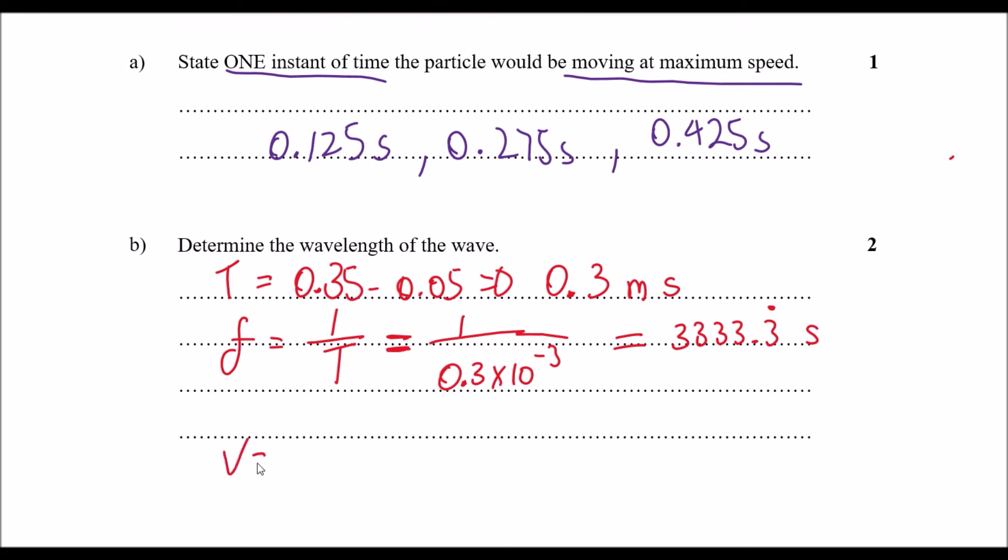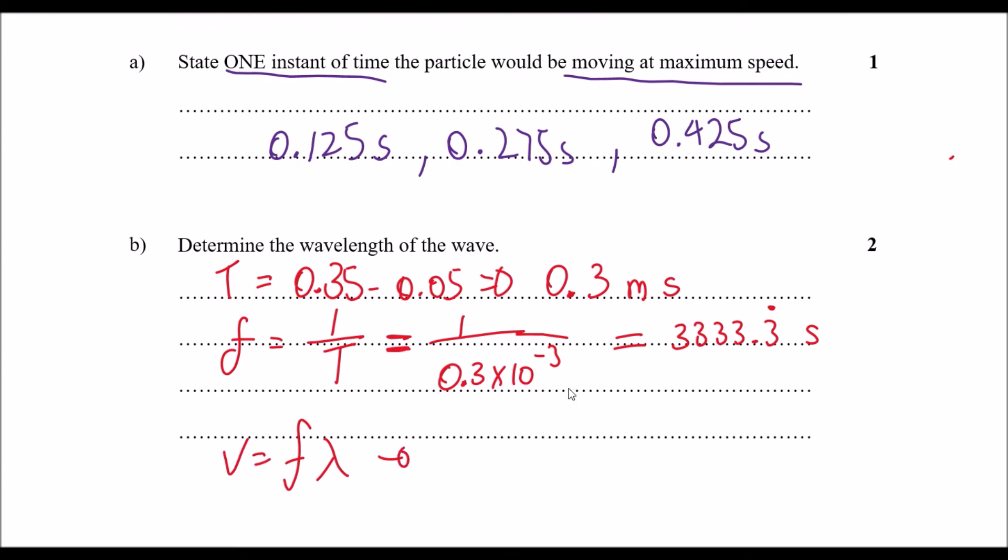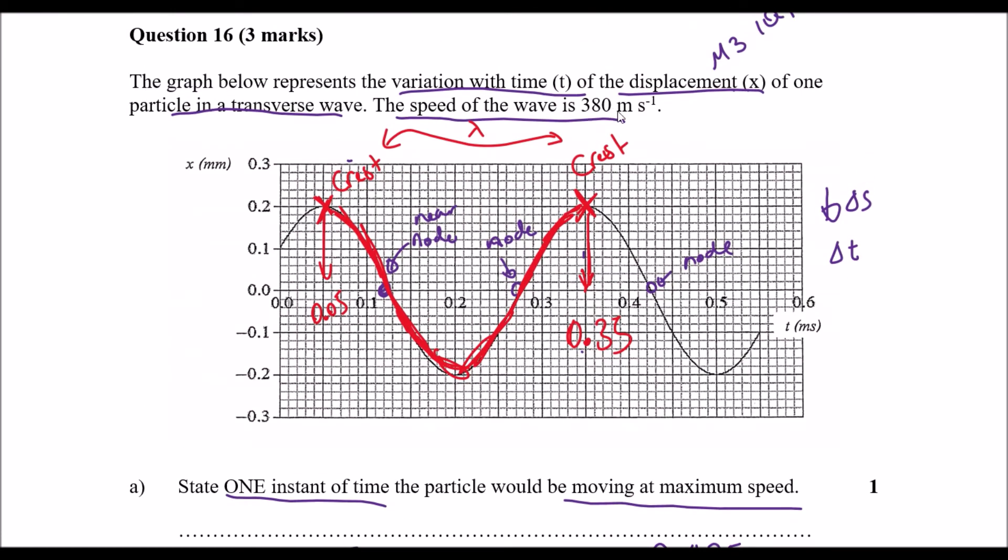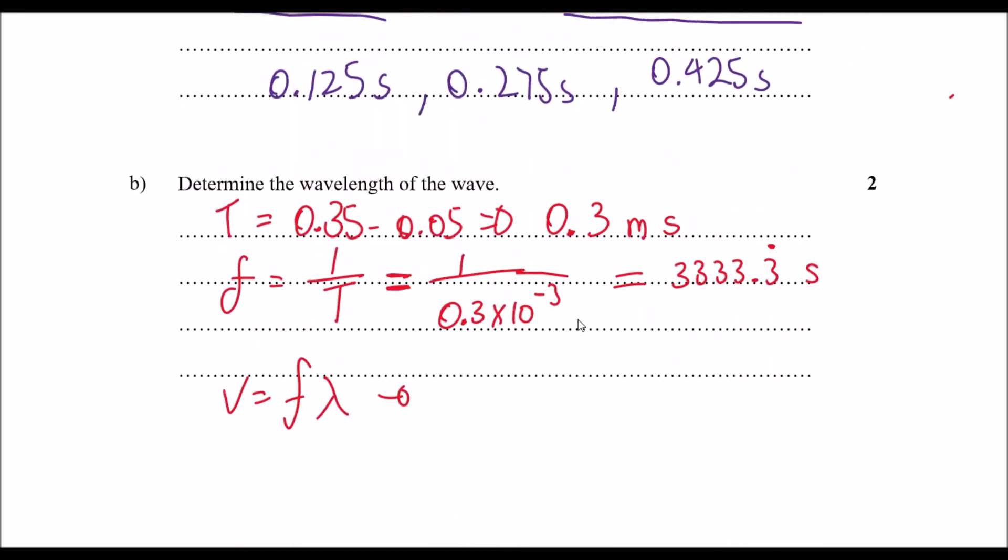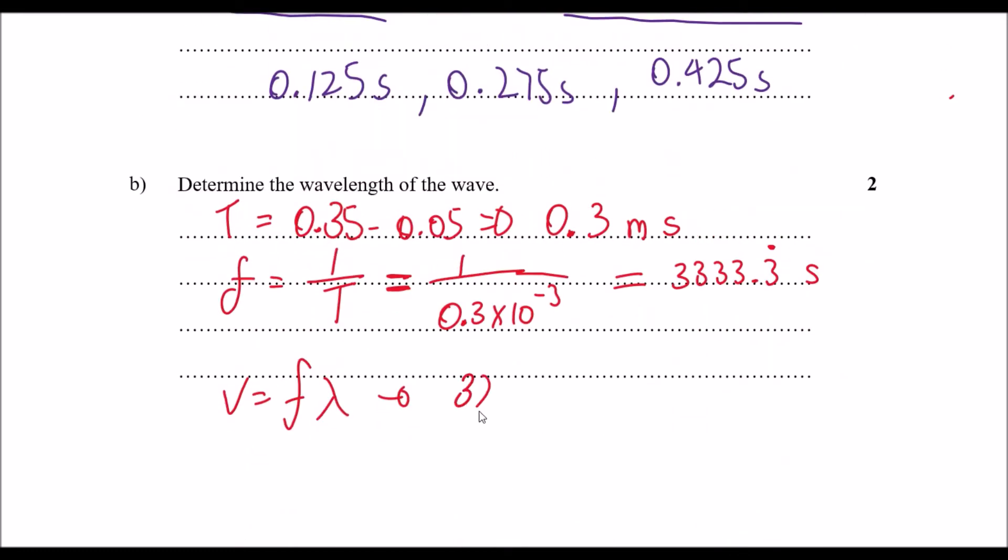We can substitute that into the wave formula, so velocity equals frequency times wavelength. The velocity of the wave is said to be 380, so 380 substitute that in.